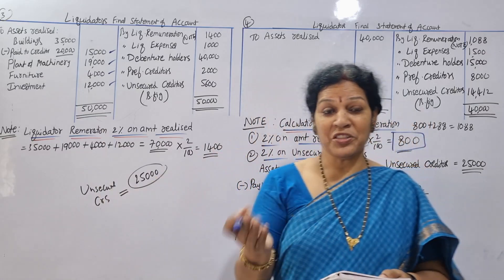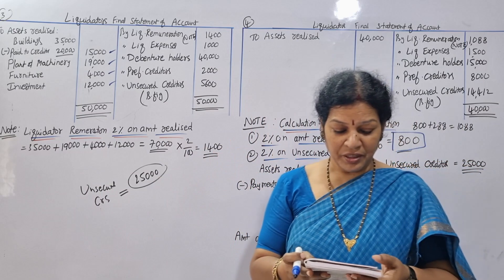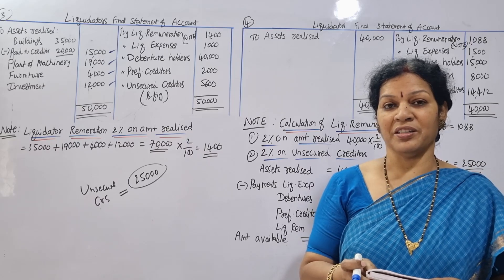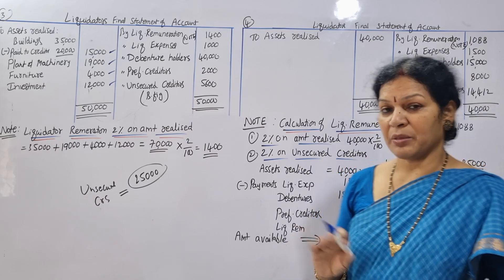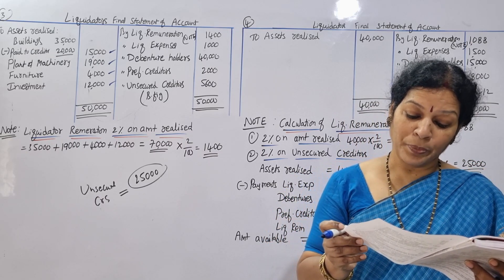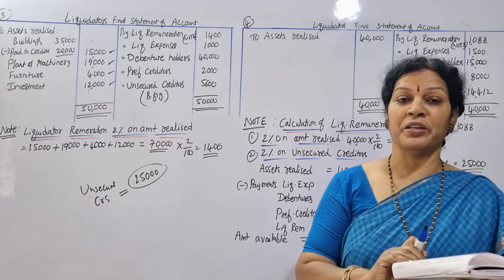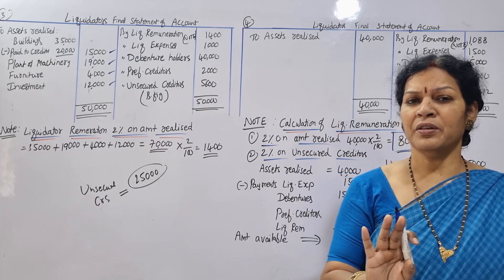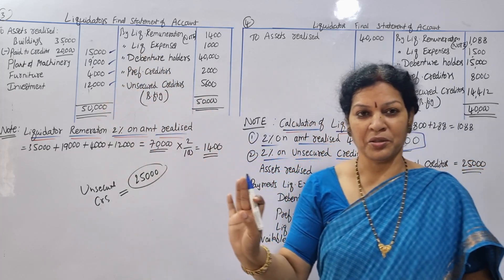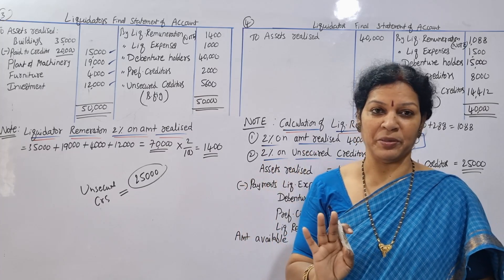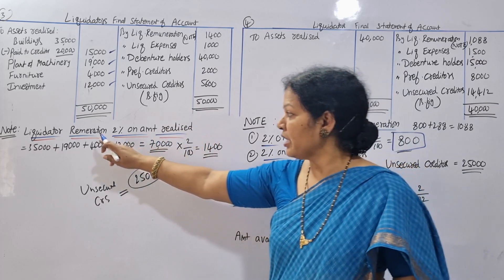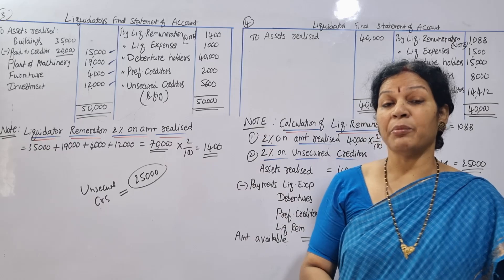Now we look at payments. We have a liquidator commission. The liquidator is entitled to 2% commission on the amount realized by him.